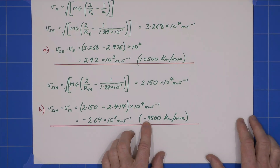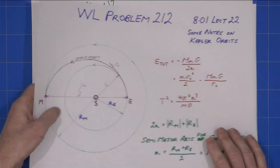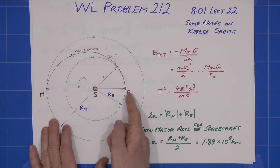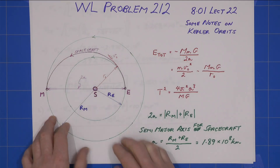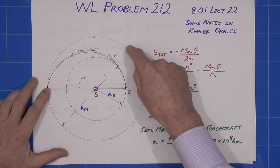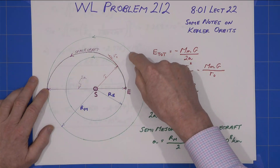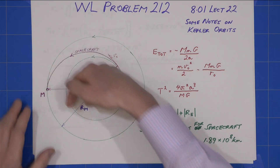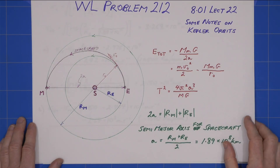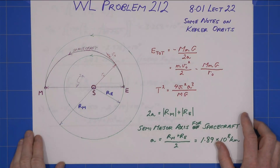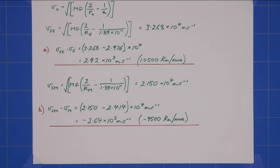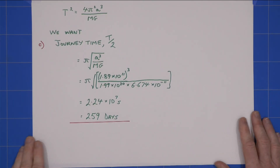The negative sign makes sense: we start at Earth and give ourselves an extra 10,500 km/hr to launch into the transfer orbit, then keep slowing down. Mars, which takes about 680 days to orbit, catches up — so Mars ends up going faster than the spacecraft. We then need an additional push in the same direction to establish a Martian orbit. It's counterintuitive but both burns are in the forward direction: one at departure and one at arrival.